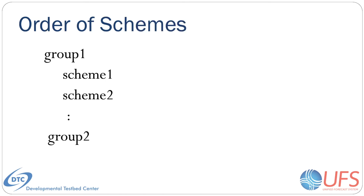The order of the schemes in a group dictates the order in which the schemes are run. Keep in mind that schemes may be interdependent on one another, and the order in which they are run may make a difference in the model's stability and results.